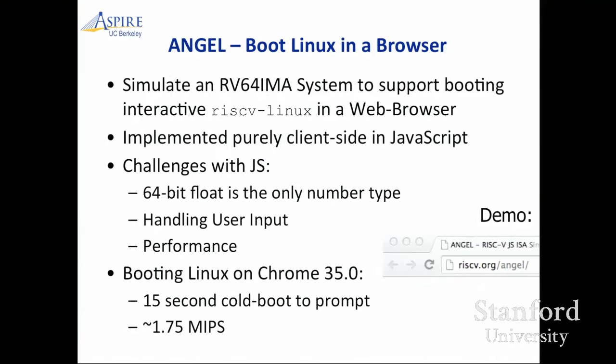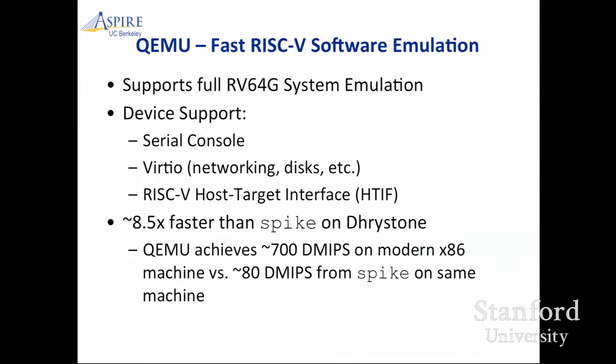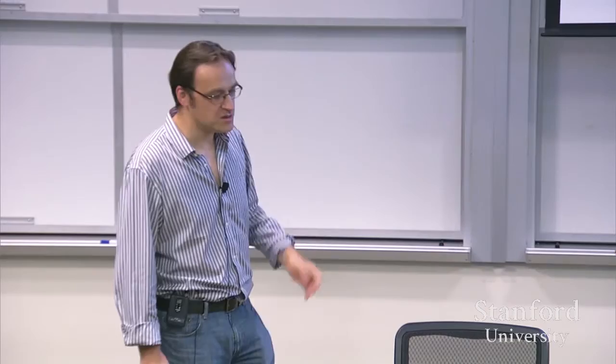There's actually a whole bunch of people around the world building RISC-V implementations. There's an 'Angel' demo — you can boot Linux in a browser. It implements the RISC-V ISA and supervisor state in JavaScript, so anybody can run it in a browser. It runs about 2 MIPS. There's somebody getting this kind of thing running at 20 MIPS — we'll probably steal those ideas and have a 20 MIPS thing running in your browser. Why would you want this? For teaching — without installing anything you can run this stuff in a browser. QEMU is much faster, running about 700 Dhrystone MIPS on a modern x86.